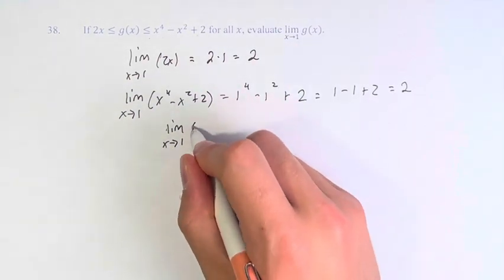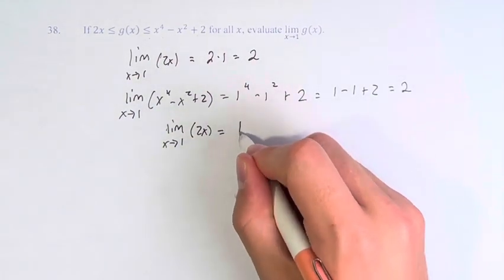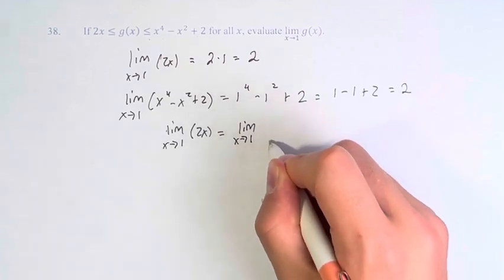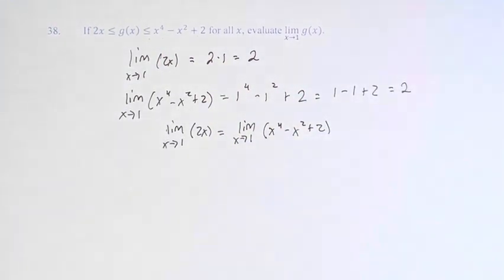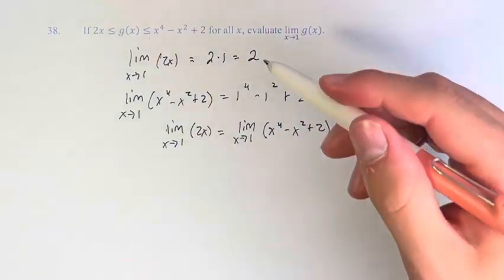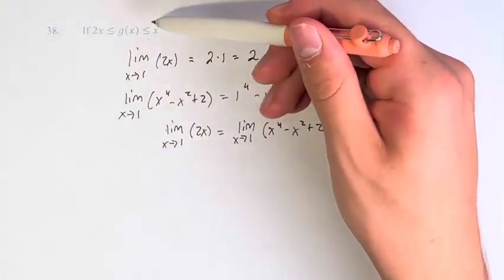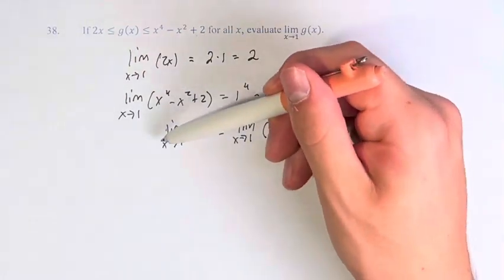Therefore, since the limit as x approaches 1 of 2x is equal to the limit as x approaches 1 of x to the fourth minus x squared plus 2, and g(x) is between these two functions near x equals 1.